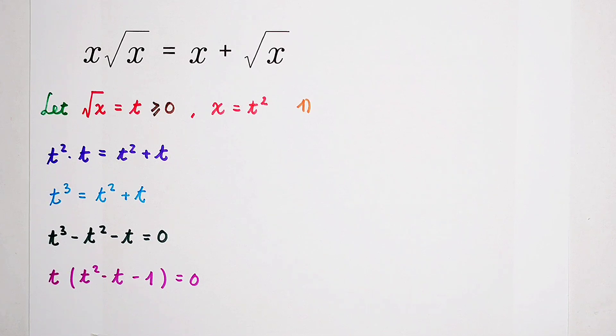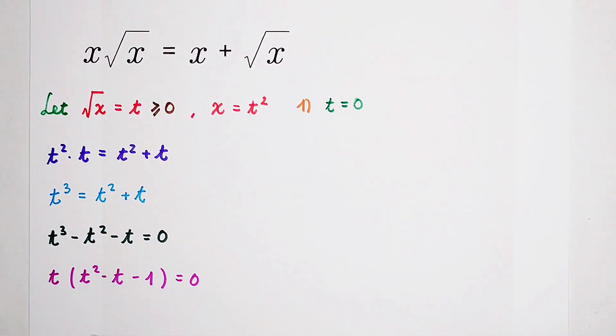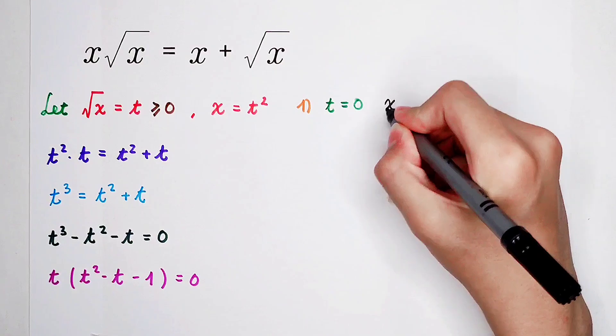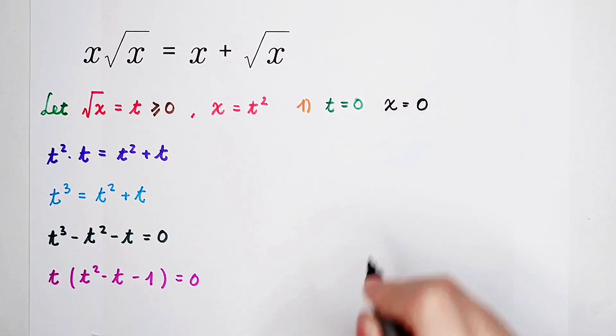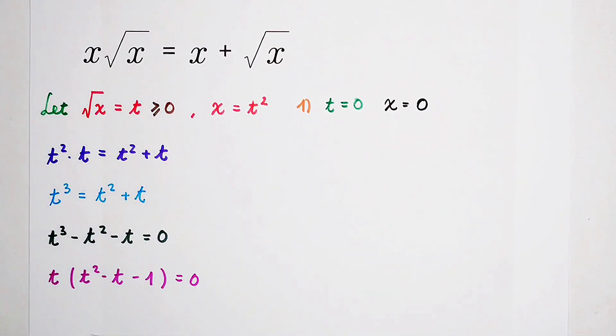And when t is equal to zero, so, when t is equal to zero, then x is equal to t squared. x is equal to zero squared is zero. So, zero times zero is equal to zero plus zero. Of course, it's absolutely correct.